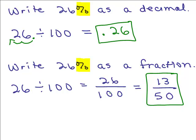Some people use shortcuts here. To write 26 percent as a decimal, they know that dividing by 100 just means moving the decimal 2 to the left, so they can go directly to 0.26 — dropping the percent sign. Same thing for writing 26 percent as a fraction: instead of first writing 26 divided by 100, you could simply right away put 26 over 100. Some people go directly to that step. Just remember, it does mean 26 divided by 100, and there's more than one way of writing that.